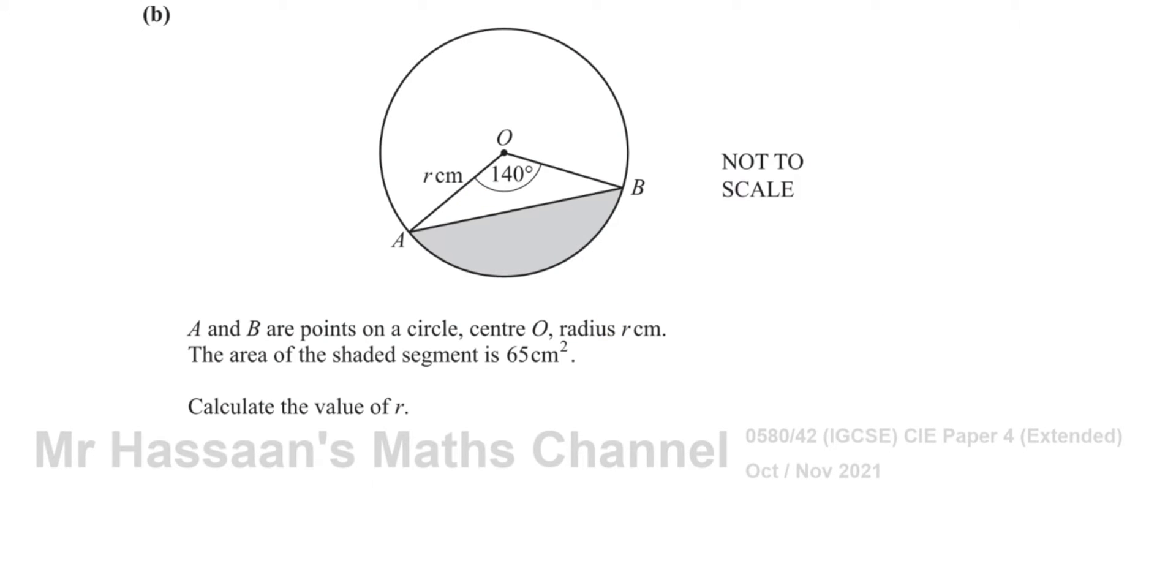Welcome back to Mr. Hassan's Math Channel. This is question number seven part B from the October November 2021 International GCSE Cambridge 0580 Paper 4 Variant 2. This question is part B of question seven. The other parts of the question can be found on the playlist that will be at the end of this video, and you can find the other parts of this question as well and all the other questions from this paper.